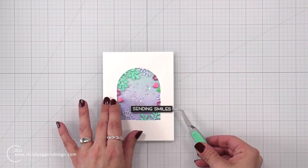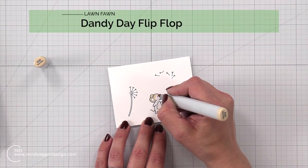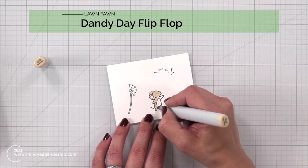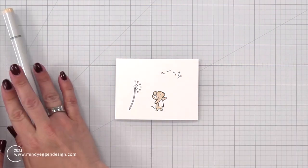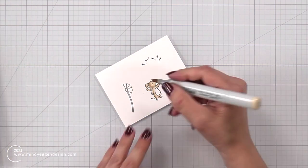Now at this point, I really did not know exactly what I wanted to do for images. I wanted something there, which is why I started with the sentiment. And then as I was digging through my stamps, I landed on the Dandy Day flip-flop set.